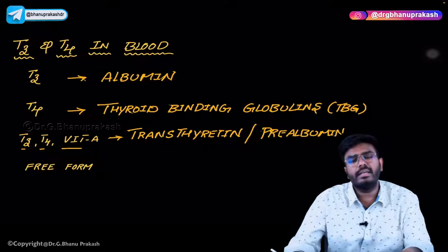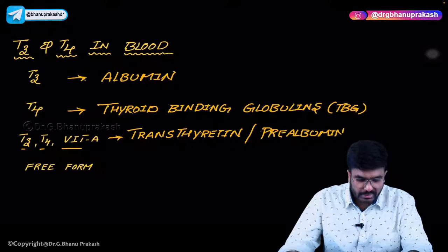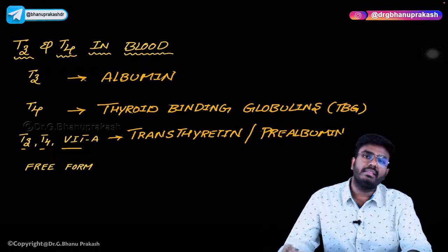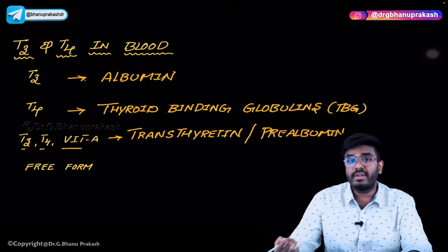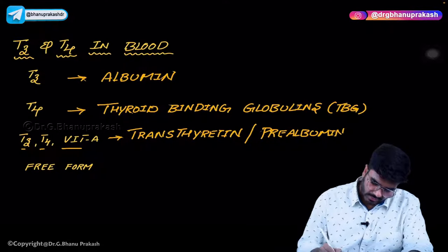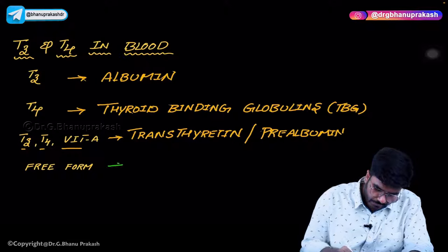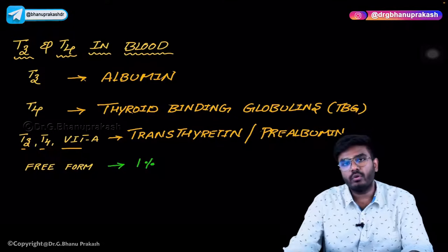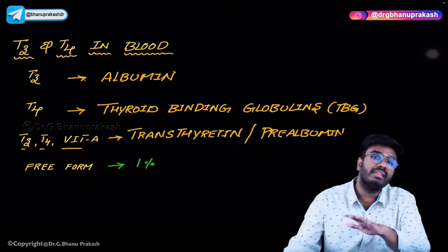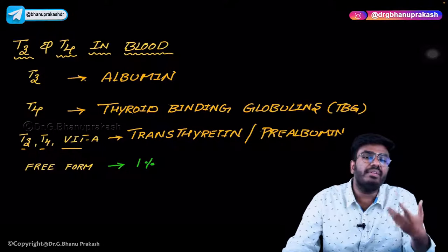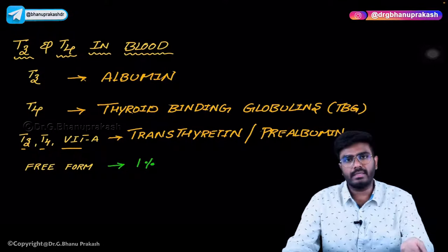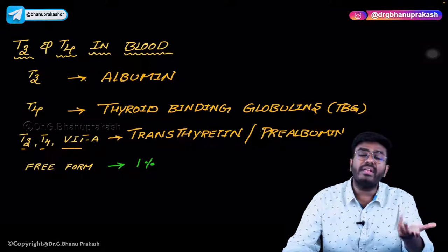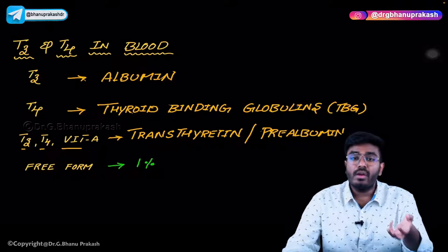Transthyretin or prealbumin is a protein present in the blood that can bind with T3, T4, and vitamin A. However, one percent of T3 and one percent of T4 are in free form — not bound with any plasma proteins. They are freely circulating in the blood, and we know that free forms are the active form.